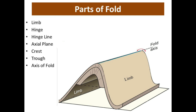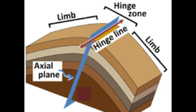The next part is the hinge. The hinge is the line of maximum curvature in a folded rock. Each bed of a rock has its own individual hinge, and the hinge may be horizontal, inclined, or vertical.